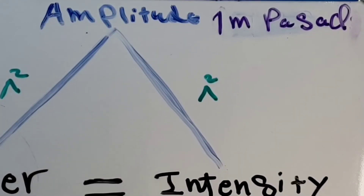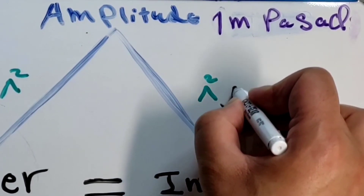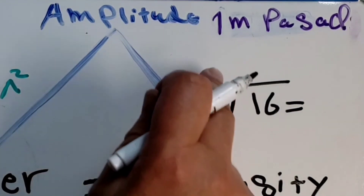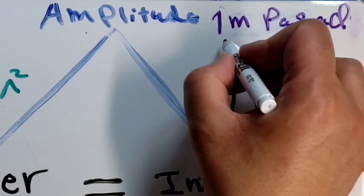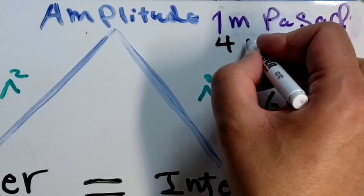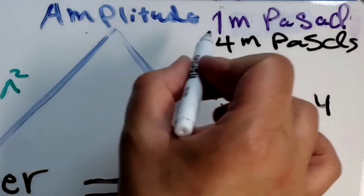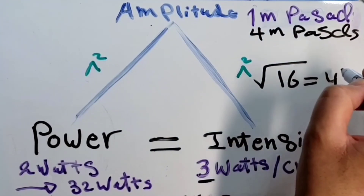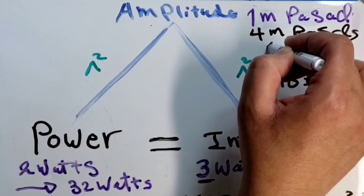Now we need the final value for the amplitude. Because intensity and power increased by a factor of sixteen, the amplitude will increase by the square root of sixteen, which equals four, since intensity and power are proportional to amplitude squared. So the final value for the amplitude will be four million pascals. The decibel for the amplitude — since it increased by a factor of four — equals six decibels.